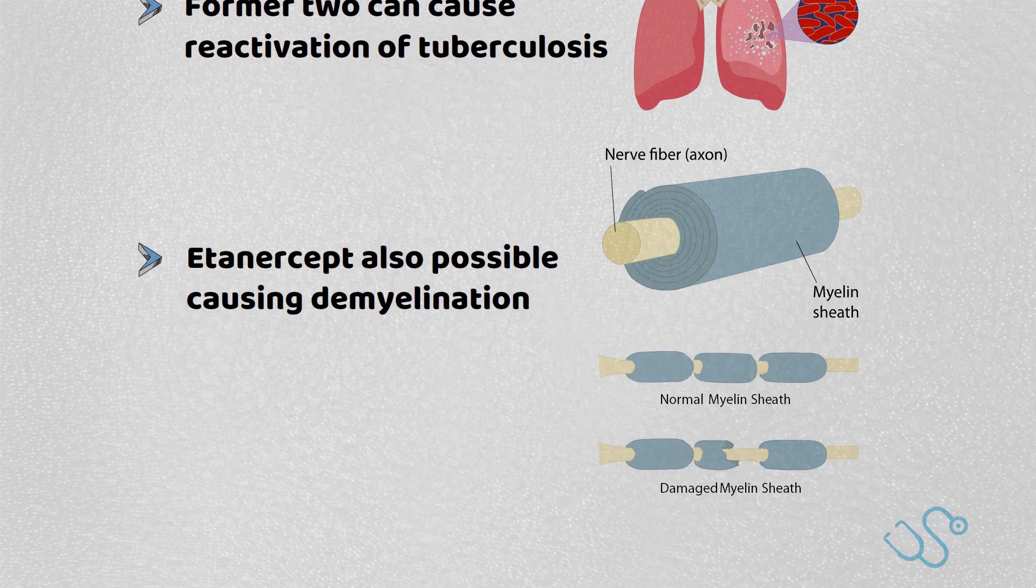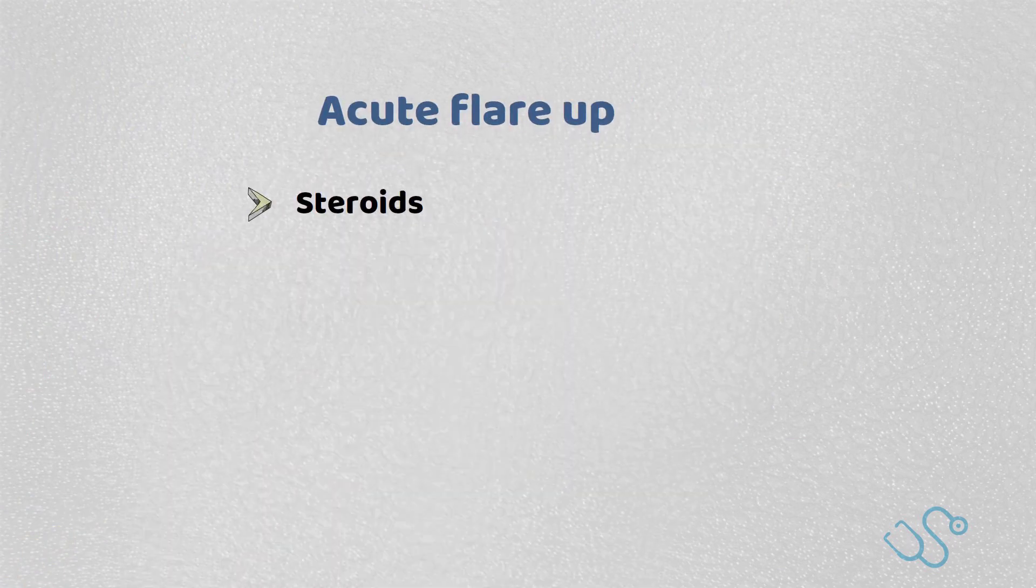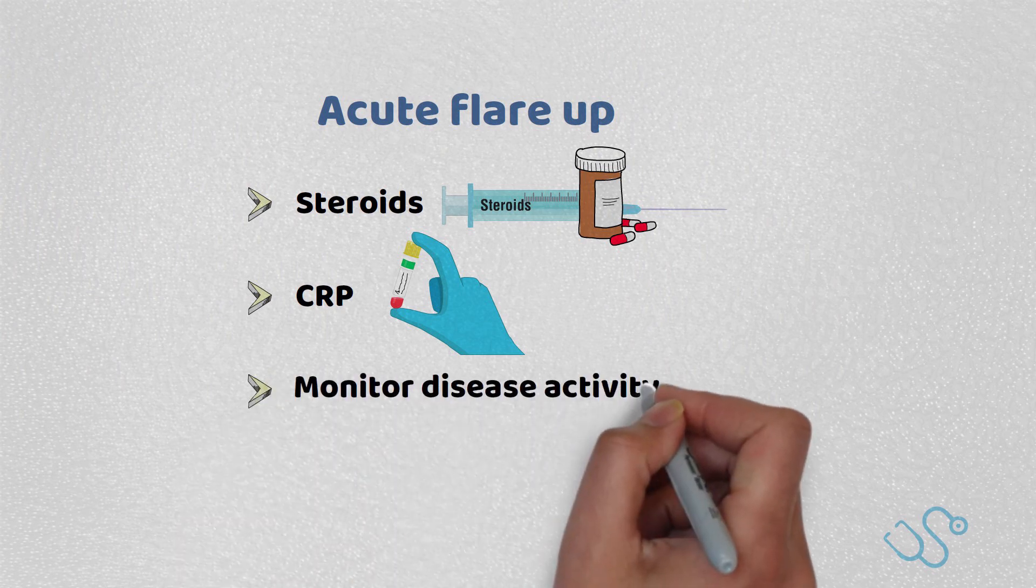Acute flare-up of rheumatoid arthritis is often managed by steroids, with inflammatory markers, particularly CRP, useful to monitor disease activity.